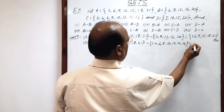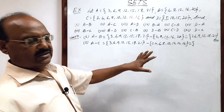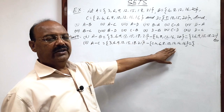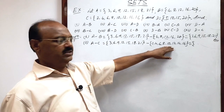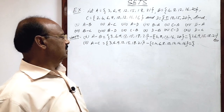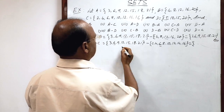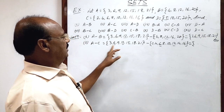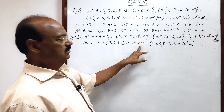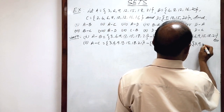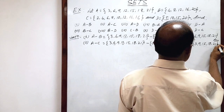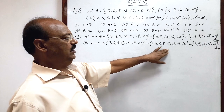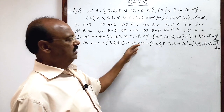We will get a set which will consist of only those elements which are available in set A but not in set C, because those elements which are in set C will be subtracted from here. You see, 6 is available in both sets, and similarly 12 is available in both sets — that is all. So the remaining elements in the answer are 3, 9, 15, 18, and 21. Just remove the elements common to both sets from set A.